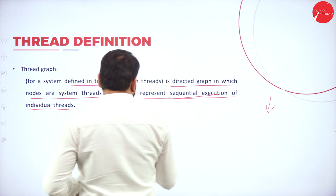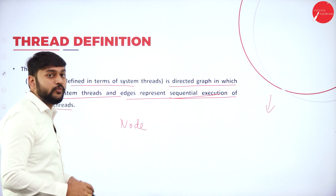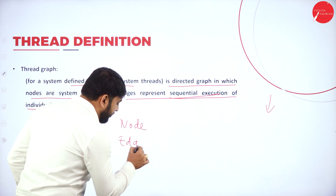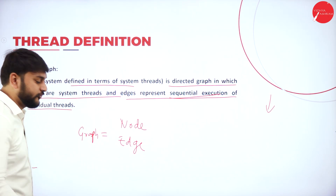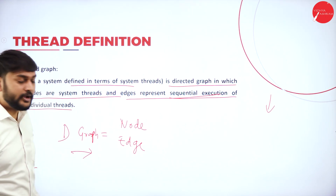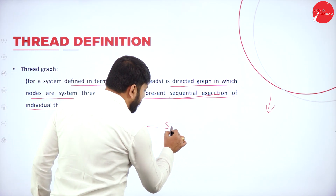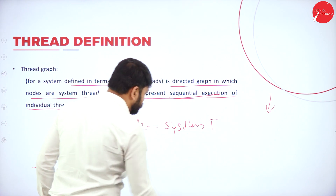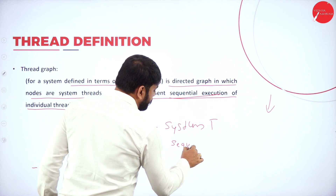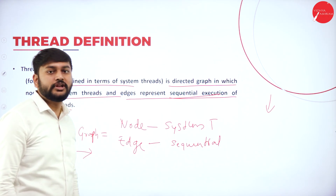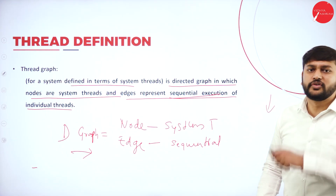To summarize the thread graph: it is a directed graph. Node means a system thread. Edges represent sequential execution — what should execute first, second, third is represented there. With five fundamental concepts — data, actions, ports, events, and threads — I will be able to describe the entire system. Let's discuss each of these points.